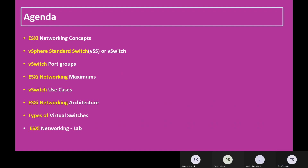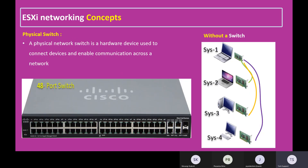In ESXi networking, we still require a physical switch — a hardware device used to connect devices and enable communication across the network. Even for a single ESX host, if you want to access it remotely, you need a network switch. In an office with 50 ESX boxes, you need one physical switch to enable communication between all of them.